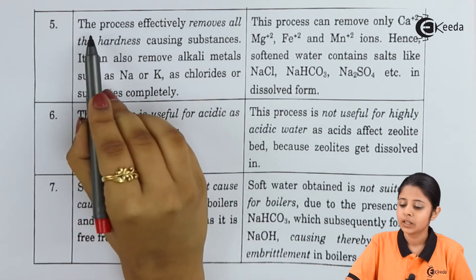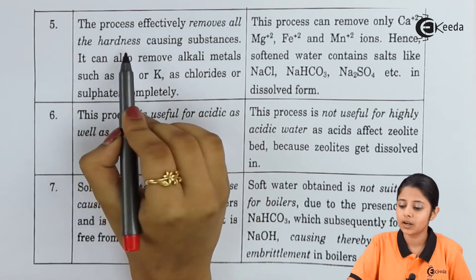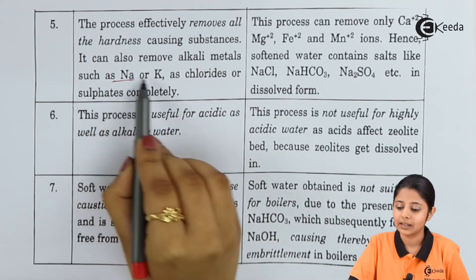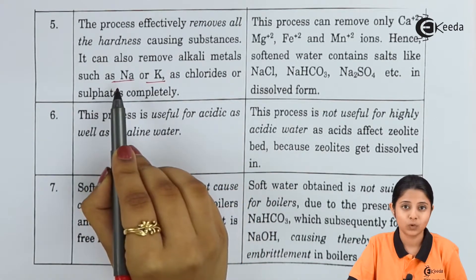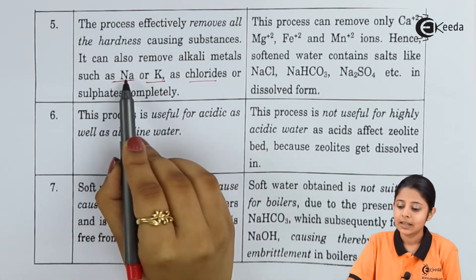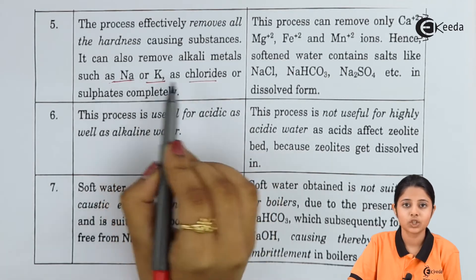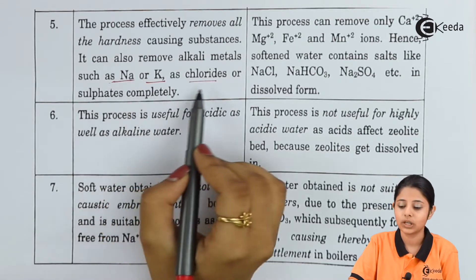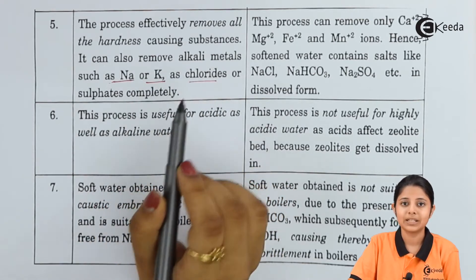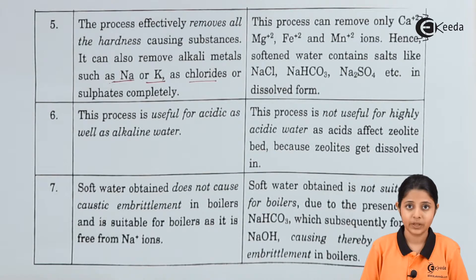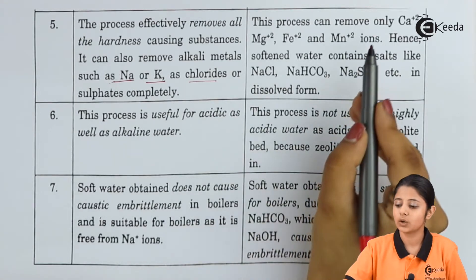Point five: the ion exchange process effectively removes all hardness-causing substances. It can also remove alkali metals like Na (sodium) and K (potassium), along with their chlorides and sulphates — such as NaCl, KCl, Na₂SO₄, and K₂SO₄. Sulphates and chlorides of sodium and potassium are also removed by the ion exchange process, which does not happen in the zeolite process.